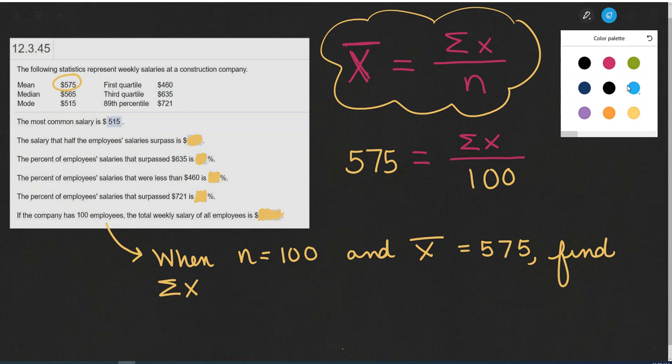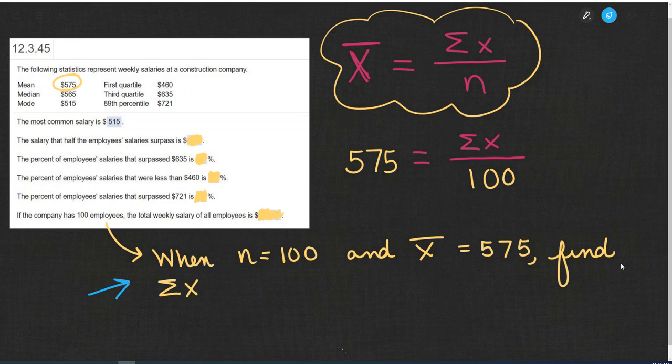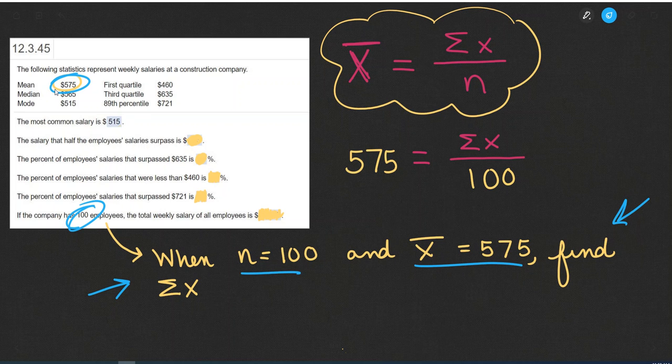Another way to read this question is when N is 100, so there's 100 employees, and the X-bar, or the mean, is $575, find the summation of all the X's, or the total of all the salaries.